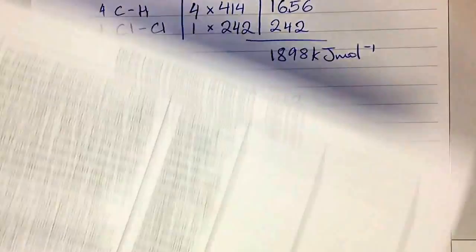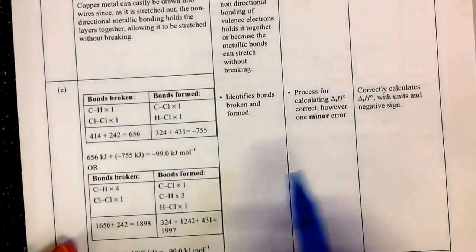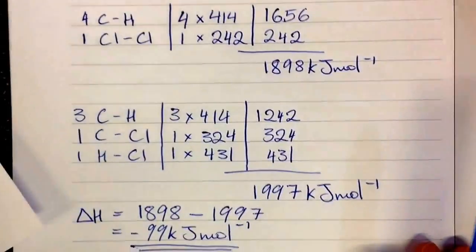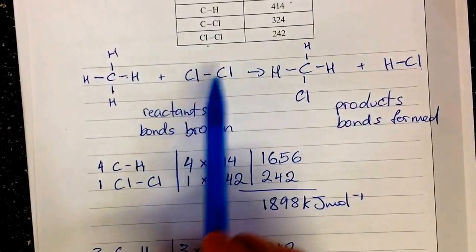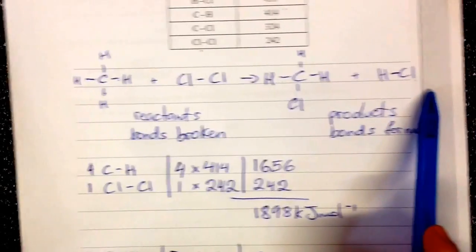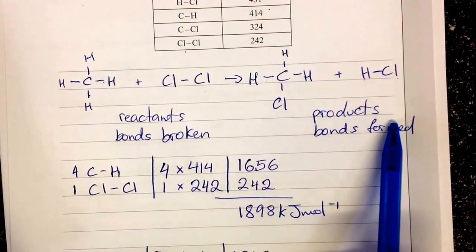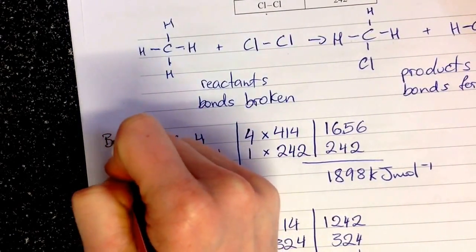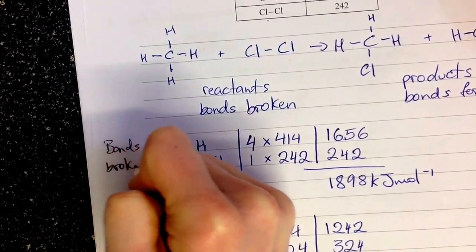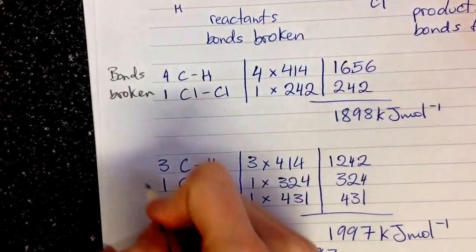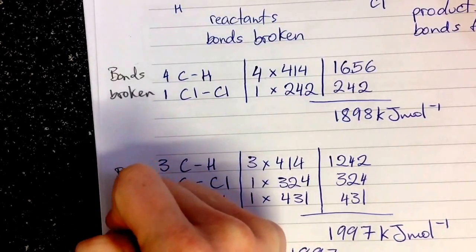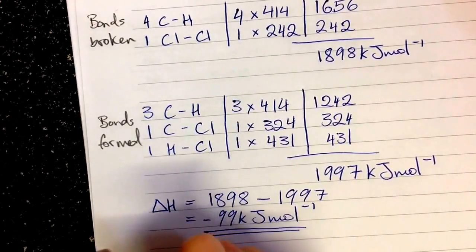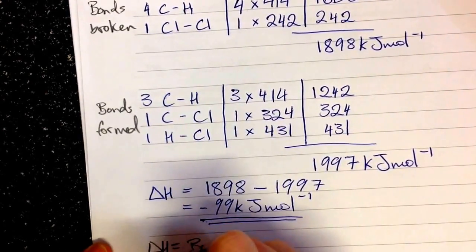Here is the marking schedule. It says here, identifies bonds broken and formed. So I suppose ideally, I've made it quite clear that these bonds here are all being broken and these bonds here are all being formed. What I should have done over here is said bonds broken and just made it really clear. And down here bonds formed. And I could have even done with my delta H bonds broken minus bonds formed.